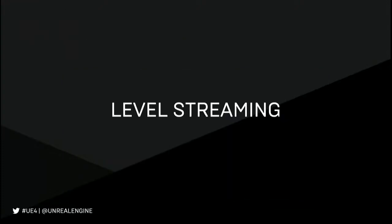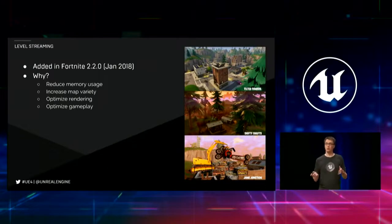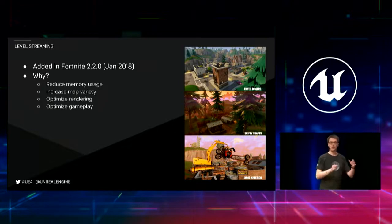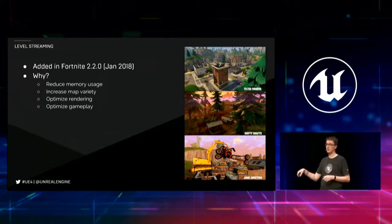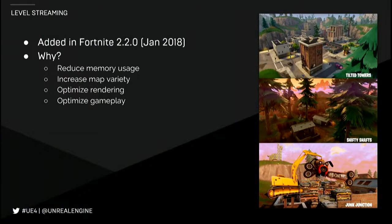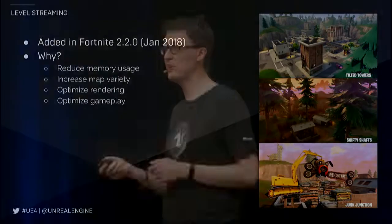Now I'm going to talk a little bit about level streaming, a feature we added in version 2.2.0 of Fortnite in January. Previously we'd load the whole map up front; we changed that to only loading the parts of the map that are around you dynamically as you dive off the battle bus or run around the map. So why did we do it? We wanted to reduce overall memory usage and also add more variety to the map. Our level designers have so many cool ideas of areas they wanted to add, but there was no way to load all of that variety at once. We needed to only load the assets for the area you're in. It also optimizes our rendering and gameplay systems — there's just less stuff in the world to process.